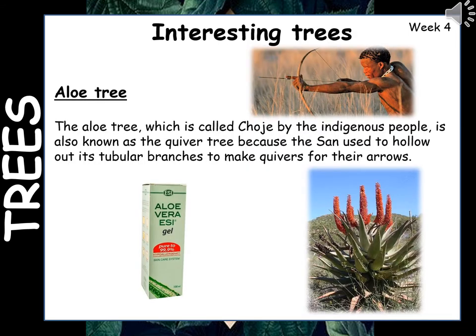This week we'll be focusing on some interesting information about three different trees. The first is the aloe tree. You can see in the picture it looks more like a type of succulent plant — it doesn't really look like a tree — but they grow all over South Africa and have so many uses, especially in medicine. The aloe tree, called the quiver tree, was used by the San people, who would hollow out its tubular branches to make quivers for their arrows.